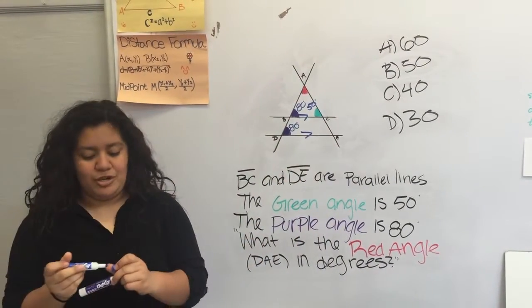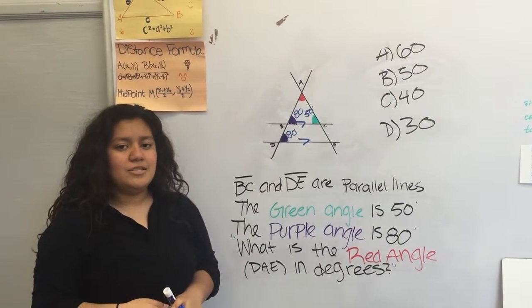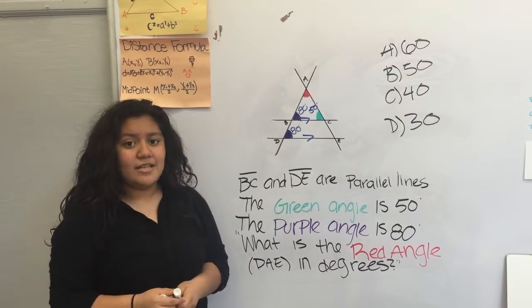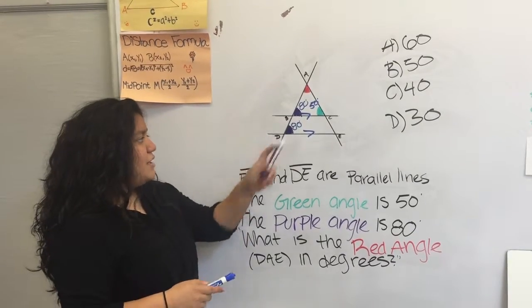Now we have our triangle and we know that the sum of the interior angles is equal to 180. So in order to get that answer, we need to add up 50 and 80.